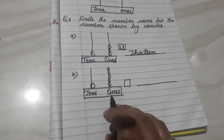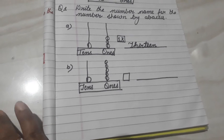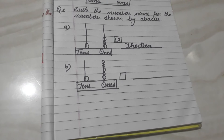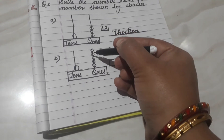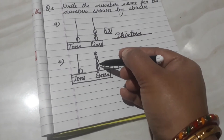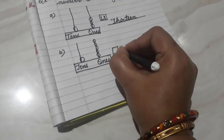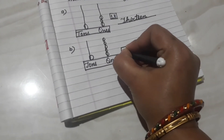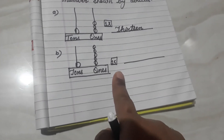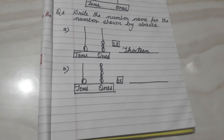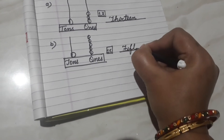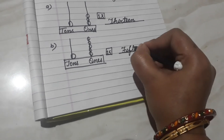Second example: how many beads are at the ones place? Count it — one, two, three, four, five. How many? Five. It means five ones. And how many tens? One ten. So which number is this? One, five — fifteen. So we will write the number name of fifteen: F-I-F-T-E-E-N, fifteen.